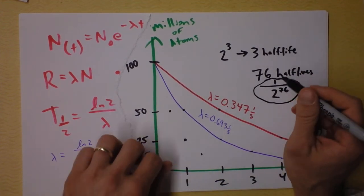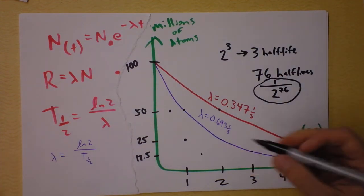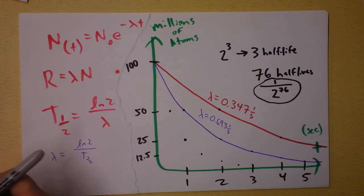So after 76 half-lives, we ought to have one over 2 to the 76th of what we started with. That's what a half-life is doing. It's cutting it in half by the number of half-lives that you've had. So if I have another half-life, I'll be down here, and then another half-life will be down here, and then another half-life will be down here. Wow, that is another beautiful curve.